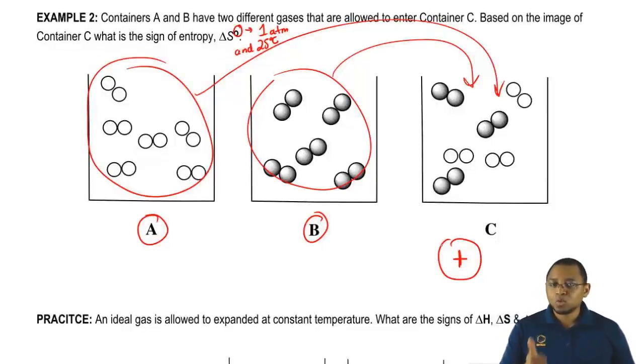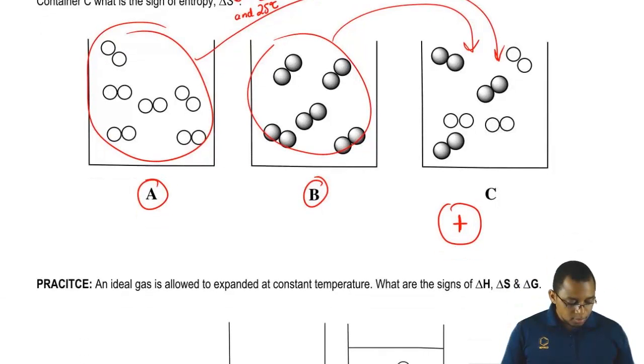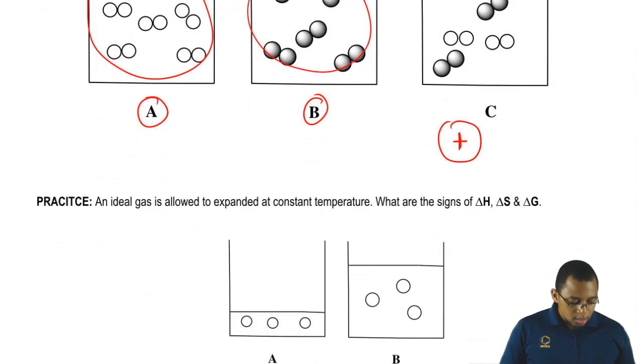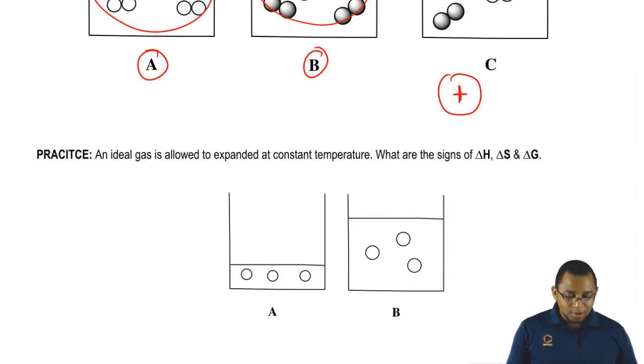Now that we've done examples one and examples two, I want you guys to at least attempt to do this following practice question. I'll give you guys a few hints. Here we're saying ideal gas is allowed to expand at constant temperature. What are the signs for delta H, delta S, and delta G?